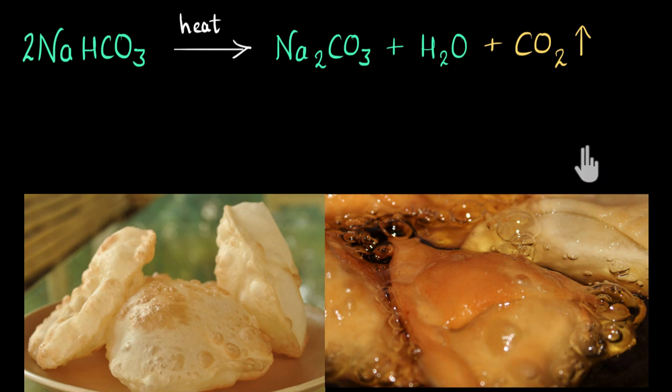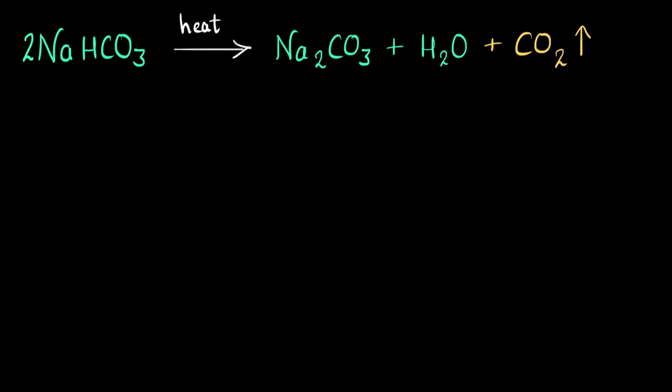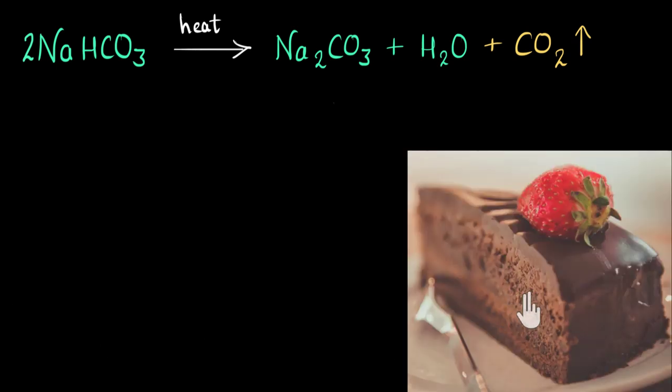Now the same thing can also be used to make soft cakes. See you would have seen that cakes have holes in it and they are very soft and spongy. Now something very similar is happening to make them soft and spongy. See over here also, when they are being baked, carbon dioxide gas gets produced and it gets trapped inside. It's trying to escape.